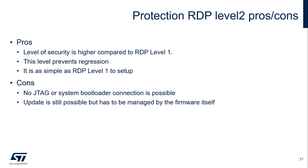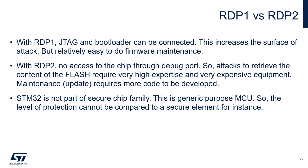The level of security is higher compared to RDP level 1. In this level, there is no regression allowed — you cannot go back to level 1 or level 0 from level 2. Setting up level 2 is as simple as setting up RDP level 1. With RDP level 2, there is no access to the chip through the debug port anymore, so attacks to retrieve the content of flash require very high expertise and very expensive equipment.